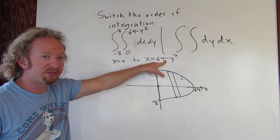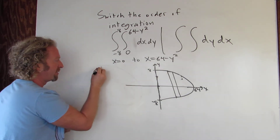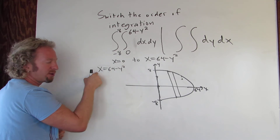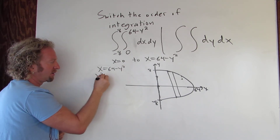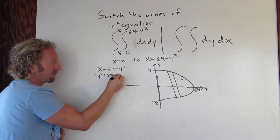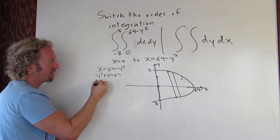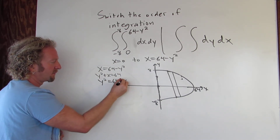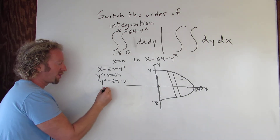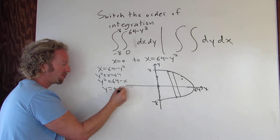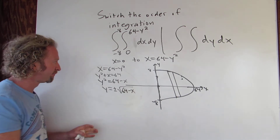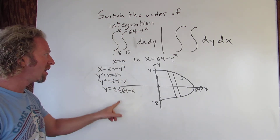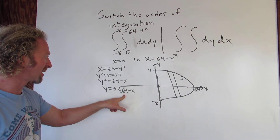We need to solve x equals 64 minus y squared for y. Adding y squared to both sides and subtracting x, then taking the square root — which always gives a plus or minus — we end up with y equals plus or minus the square root of 64 minus x.